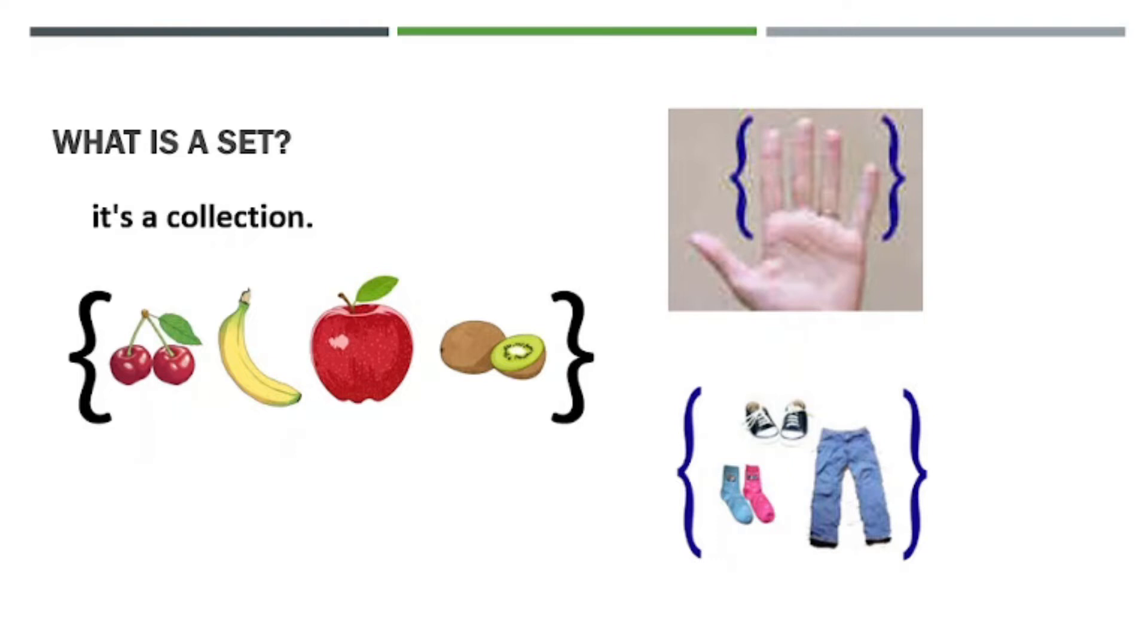Another example of a set is our fingers. Let's say we have our index finger, middle, ring, and pinky. So that's one set. If we think about it, a set is things grouped together that have a common property or common characteristic. That's what we call a set.